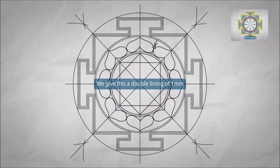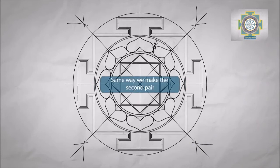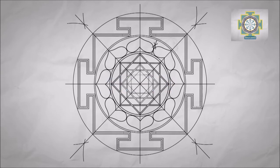We give this a double lining of 1 mm. Same way we can make the second pair, and we finish the design. Put a bindu dot in the center of the Yantra.